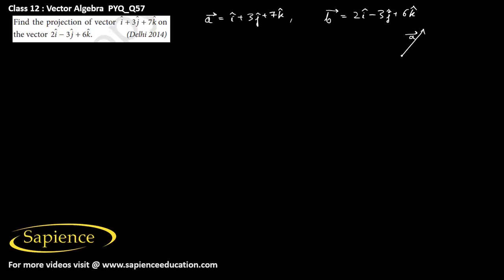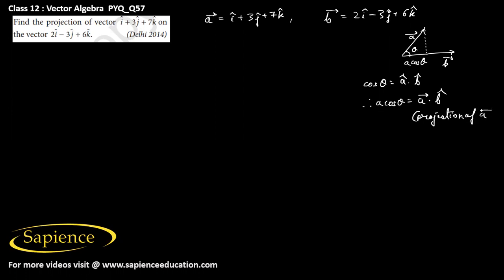Let's say this is vector a and this is vector b, and we have to find the projection of vector a on vector b. If the angle between a and b is theta, then the required projection will be a·cos(theta). Now cos(theta) equals â·b̂, so a·cos(theta) equals a⃗ dot b̂. This is the required projection of vector a on vector b.